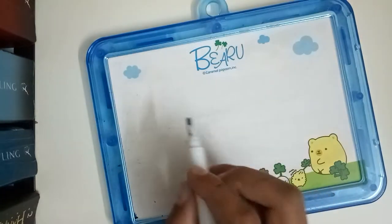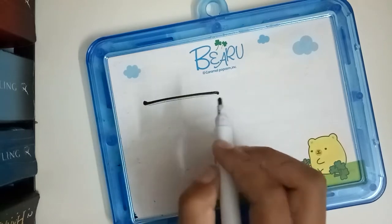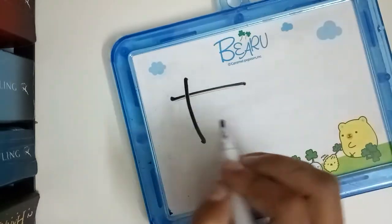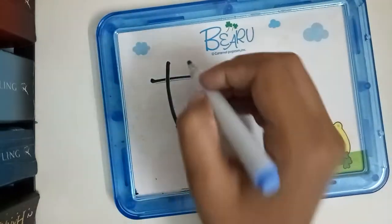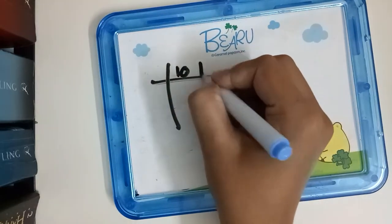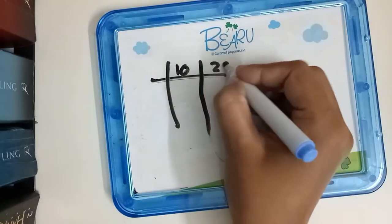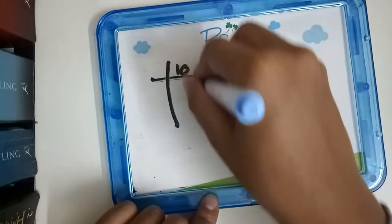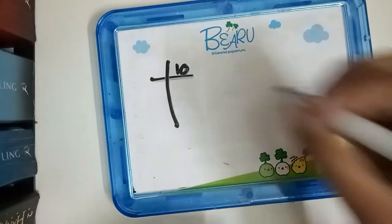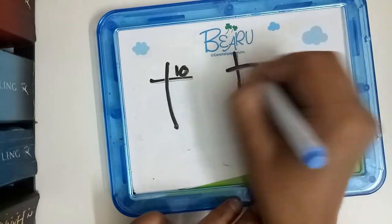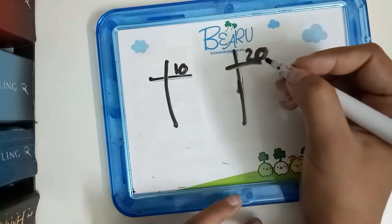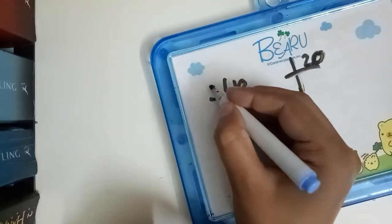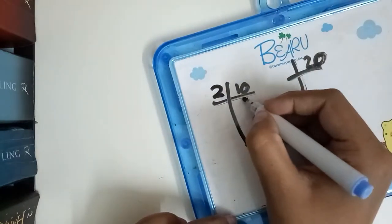In this method, you're going to take two numbers and draw a line like this. Take two numbers — let's say 10 and 20 — and instead of doing it right over here, make another line.